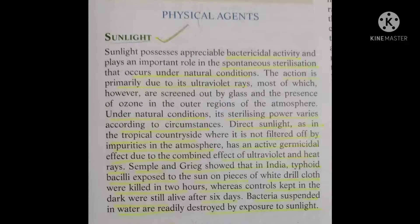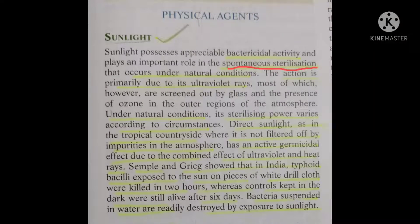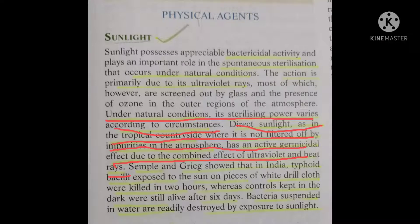The first type of physical agent is sunlight. Sunlight has bactericidal activity — it kills bacteria — and it is a spontaneous, naturally occurring sterilization method. Under natural conditions, the sterilizing power of sunlight varies depending on certain conditions. For example, direct sunlight in tropical countryside areas is not filtered off by impurities in the atmosphere, so it has the maximum germicidal effect.